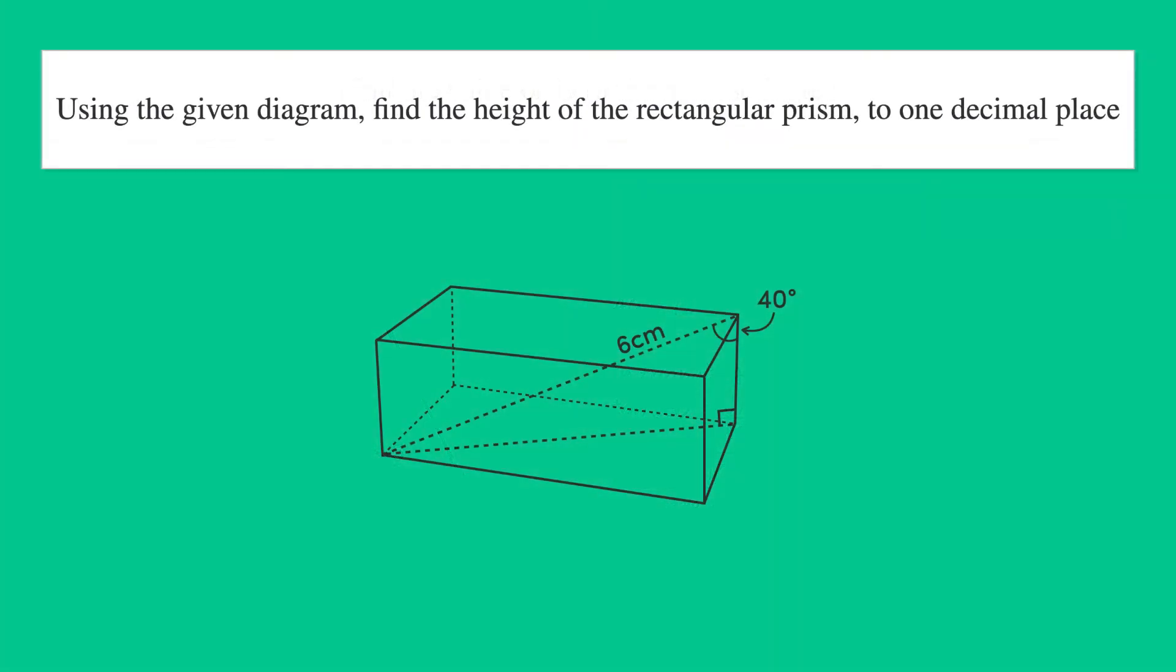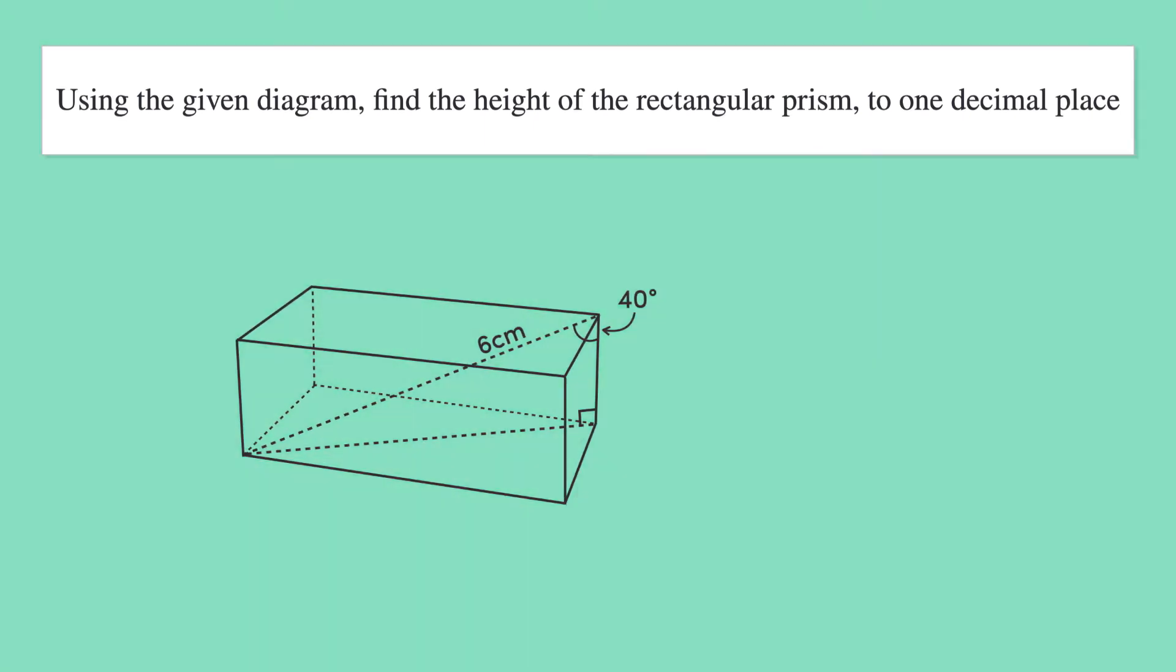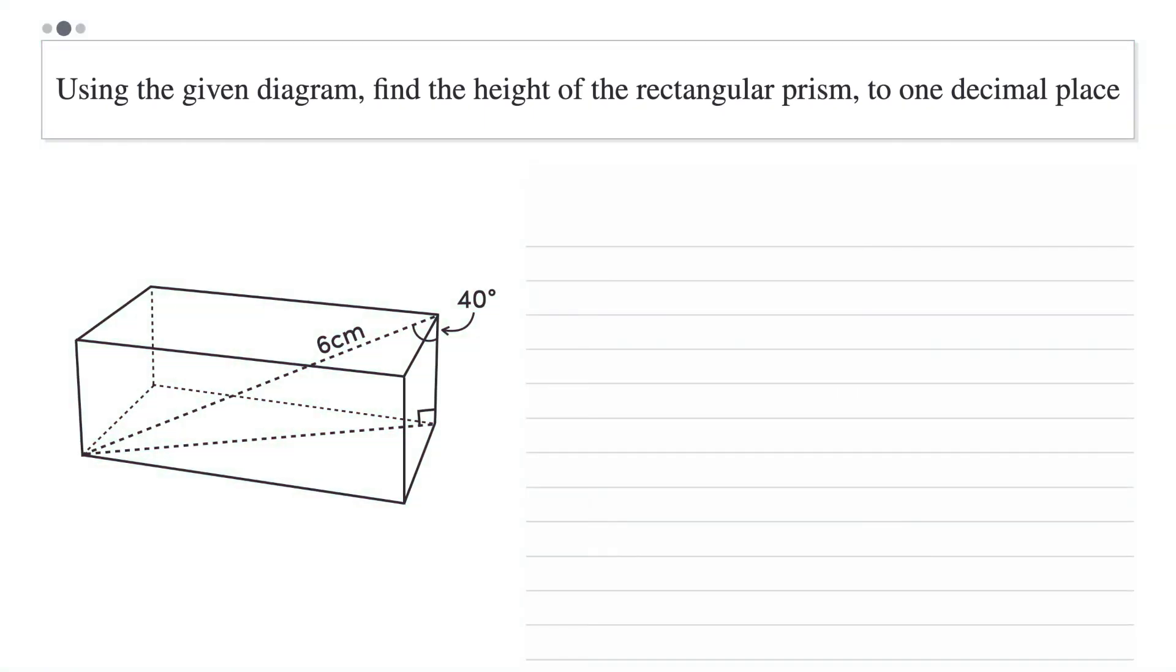Using the given diagram, find the height of the rectangular prism to one decimal place. Alright, let's take a look at what information we're given. We're given one side length and one angle size in this right angle triangle. And we're being asked to find the height of the rectangular prism, which is this length here. In other words, we've been given the length of the hypotenuse and we want to find the length of the side adjacent to the angle of interest.